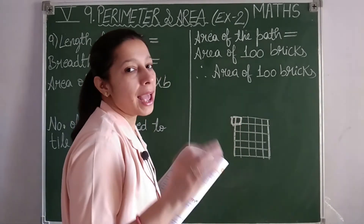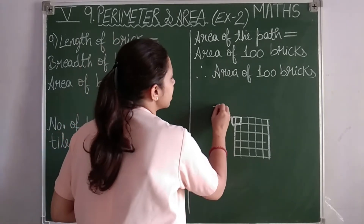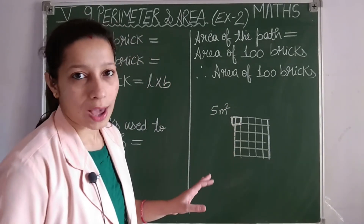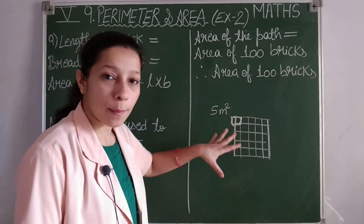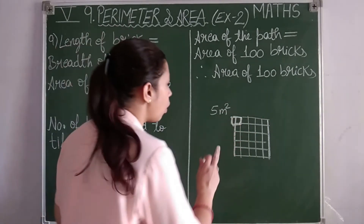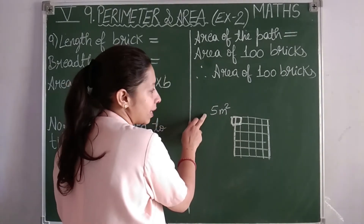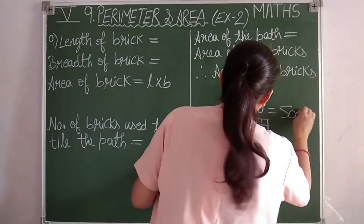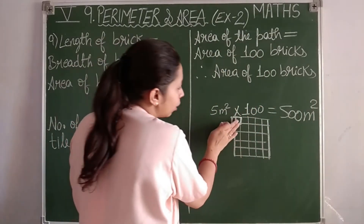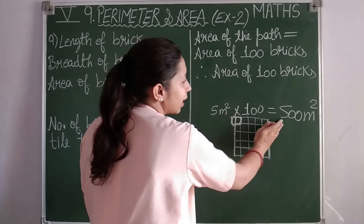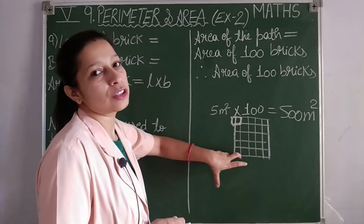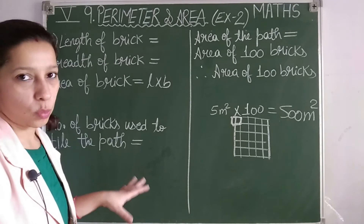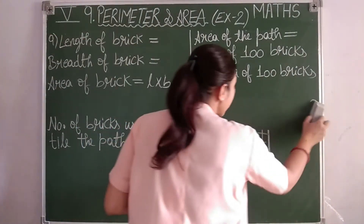For example, if the area of one brick is 5 square meters and 100 bricks are used, then the total area of the path equals 100 times 5 equals 500 square meters. The area of the path equals the total area of all bricks used. This is the concept we apply to solve the question.